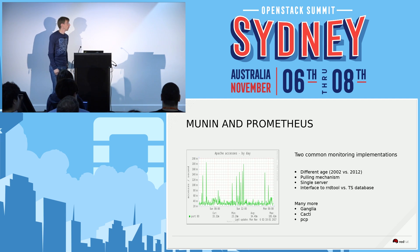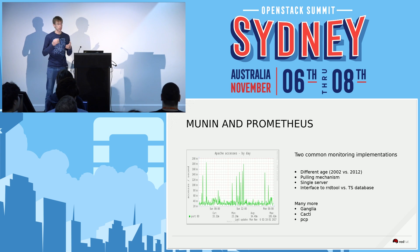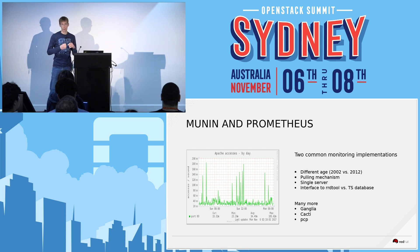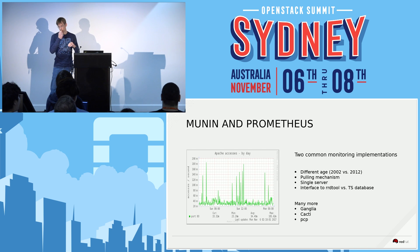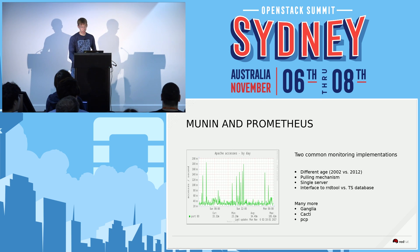Looking at the techniques used, Munin is quite simple — it's just an interface to RRD tool — and it's also doing something like rendering graphics. Prometheus uses a bit more components and is mostly a time series database, also using a pull mechanism. There are tons of other tools like Ganglia, Cacti, PCP, and so on.